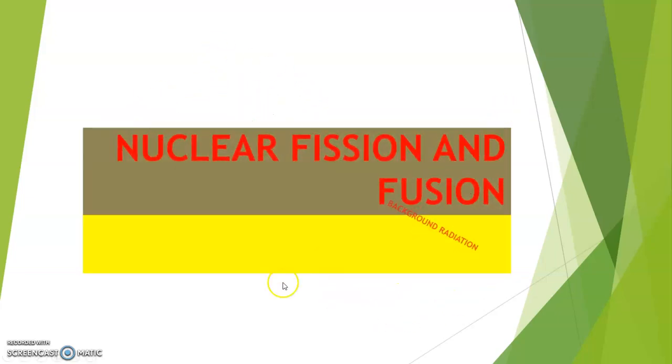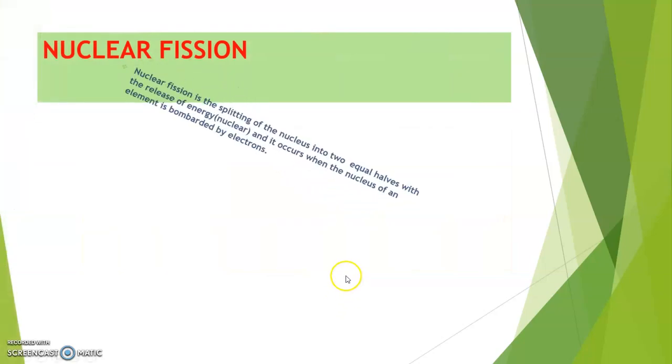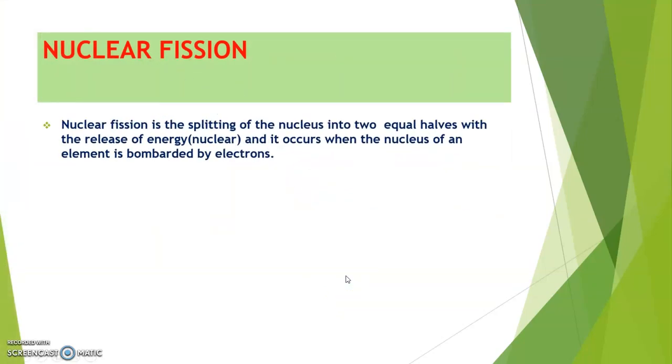What is nuclear fission? Well, nuclear fission is simply the splitting of the nucleus into two equal halves with the release of energy, and it occurs when the nucleus of an element is bombarded by electrons.